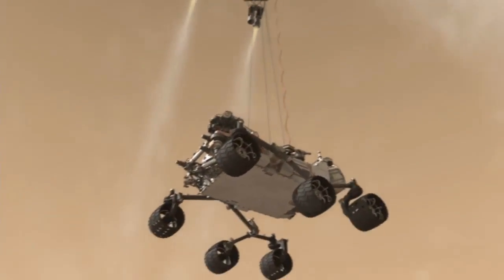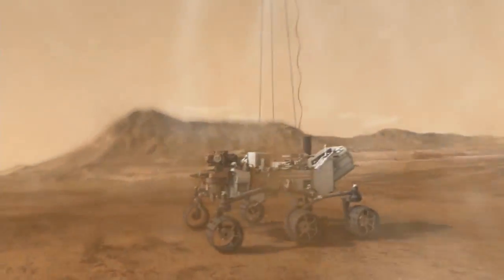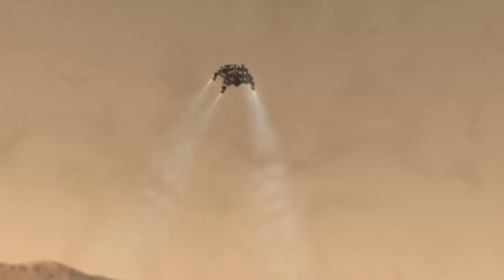Once the rover is safely on the ground and touchdown has been detected, the descent stage cuts the rover loose. It flies away, leaving Curiosity safe on the surface of Mars.